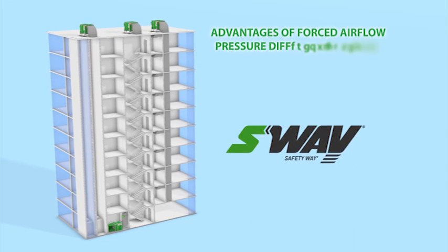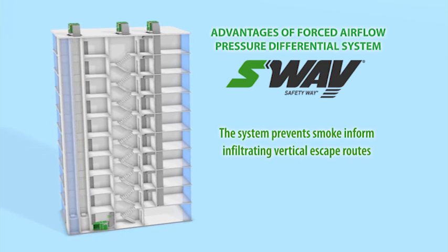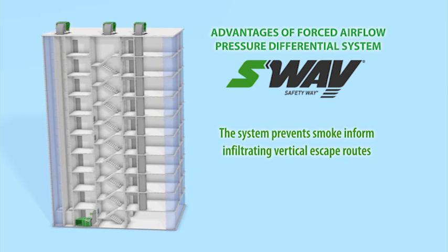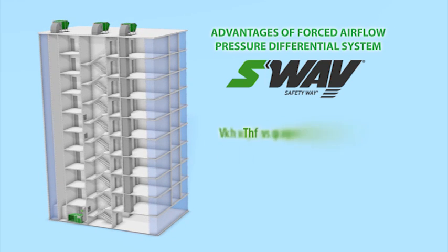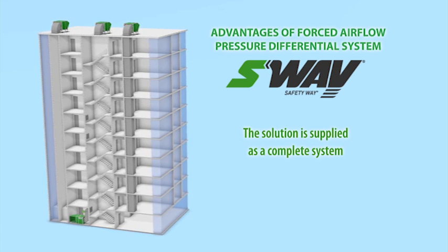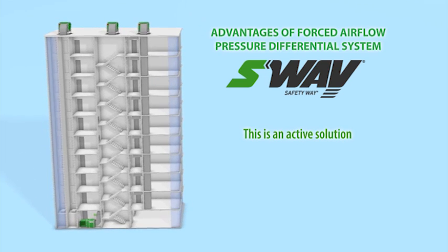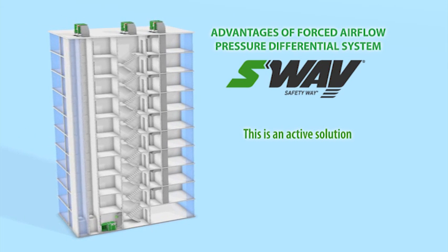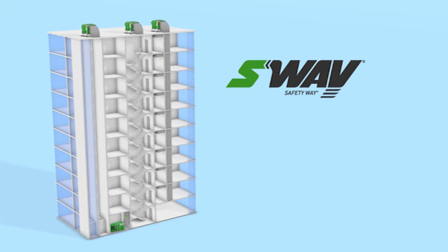Safety Way system advantages: the system prevents smoke from infiltrating vertical escape routes in the event of a fire in residential, office and industrial buildings, regardless of how tall they are, the time of year, temperature differences, or wind forces. The solution is supplied as a complete system optimized for use in a given building. This is an active solution, allowing for simple adjustments of settings, monitoring of current operational parameters, as well as automatic adjustment to rapidly changing parameters such as air temperature or wind.